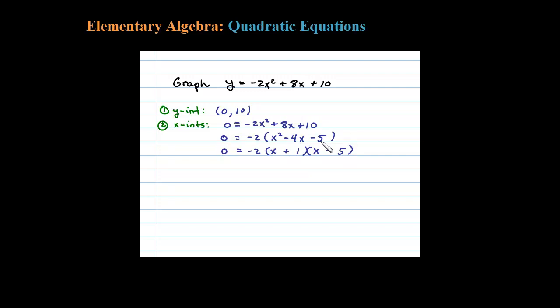So then set each variable factor equal to 0. So either x + 1 = 0 or x - 5 = 0. That's the zero property. x = -1 or x = 5. So here's my two x-intercepts as ordered pairs: (-1, 0) and (5, 0).